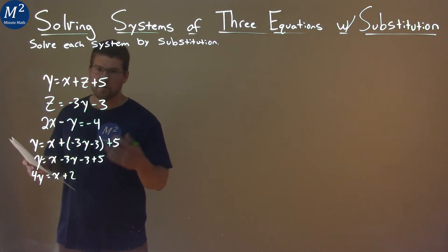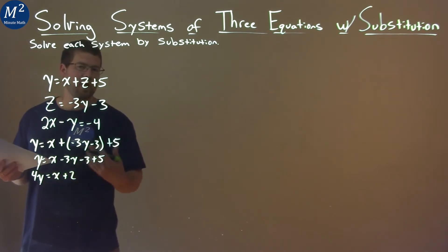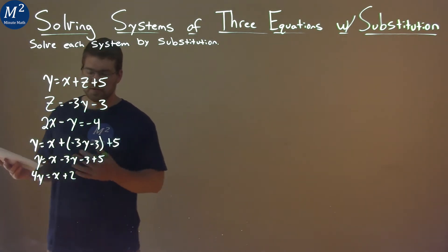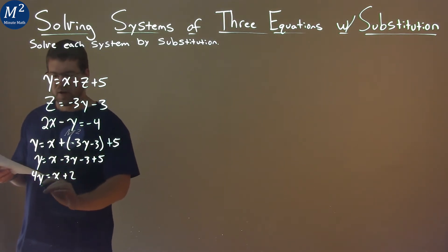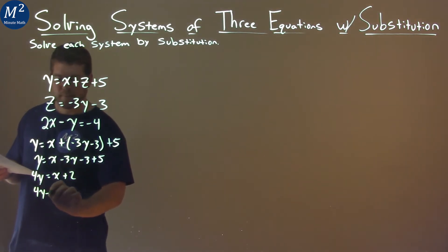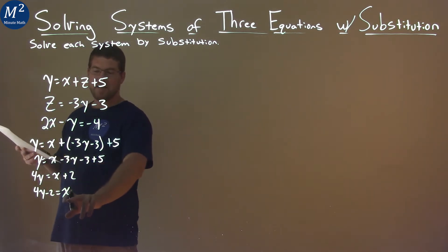The reason why I'm going to solve for x here is I know I can easily get x by itself without fractions, and I usually stumble upon those fractions. So if I can avoid it, I'm going to try it. So subtract 2 from both sides, and we have 4y minus 2 equals x.